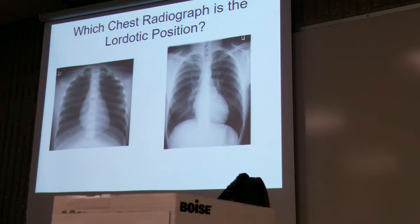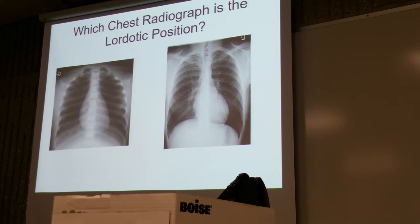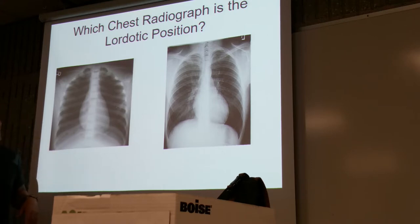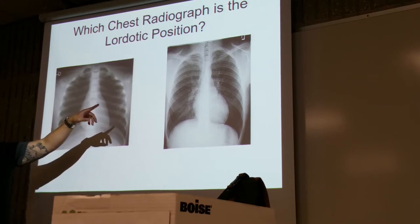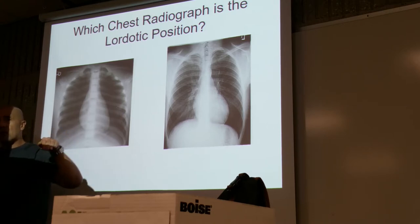The whole purpose of this lordotic position: when we're looking at a normal chest x-ray, pay attention to the orientation of the clavicle as well as the ribs. On a normal image, the clavicles point downwards generally, and the ribs go down in an angular projection.